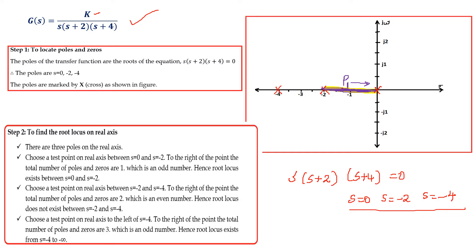From -2 to -4, locate another test point P2. Looking to the right, the number of poles is 2, which is an even number. So there is no root locus existing between -2 and -4.